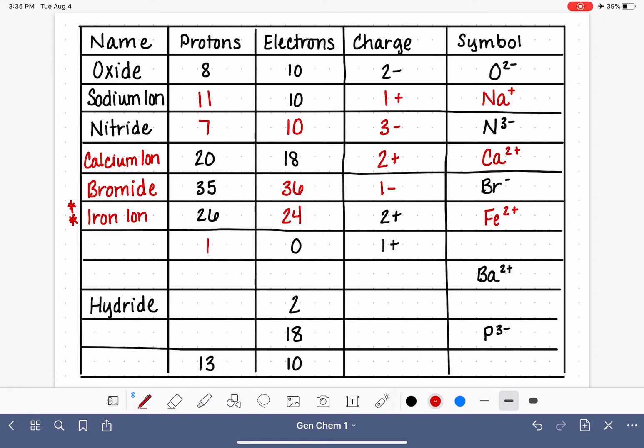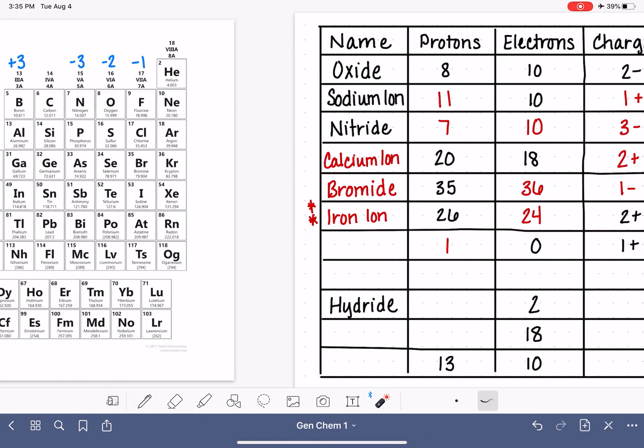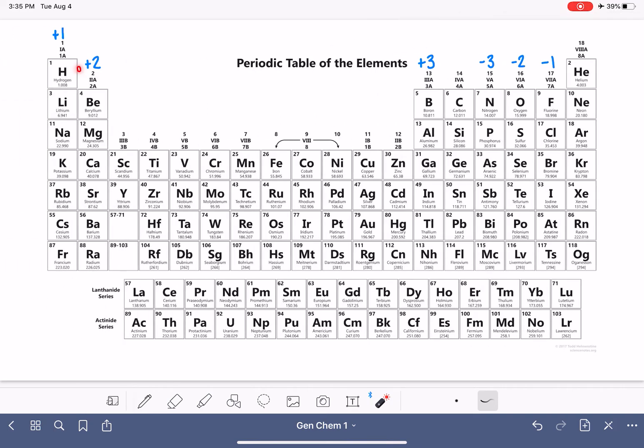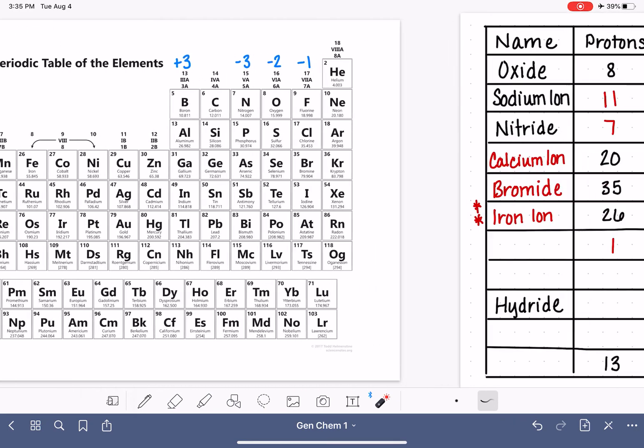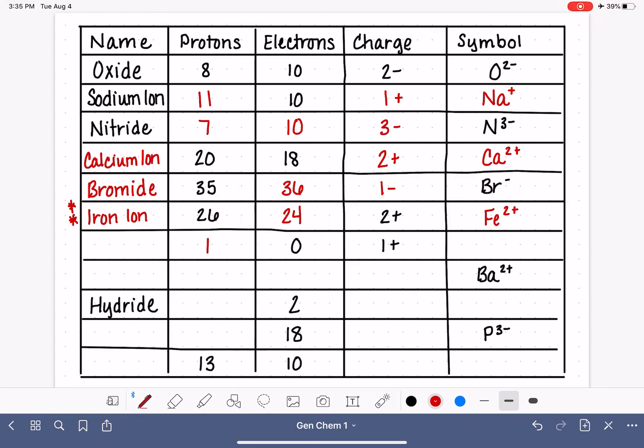Well, the plus 1 charge tells us that there are more protons than electrons. There's specifically one more proton than electron. So this is a 1 proton, 0 electron, plus 1 ion. Who is this ion? Let's go find the periodic table. 1 proton is hydrogen right there. So this is H plus, and we call this hydrogen ion.